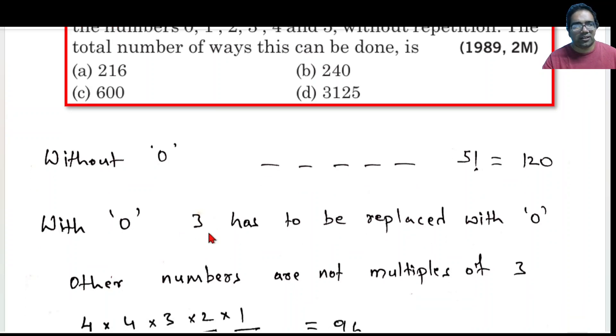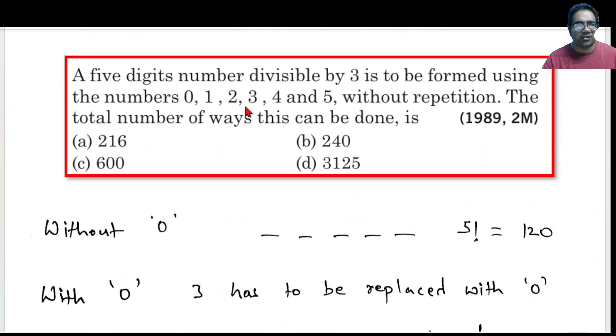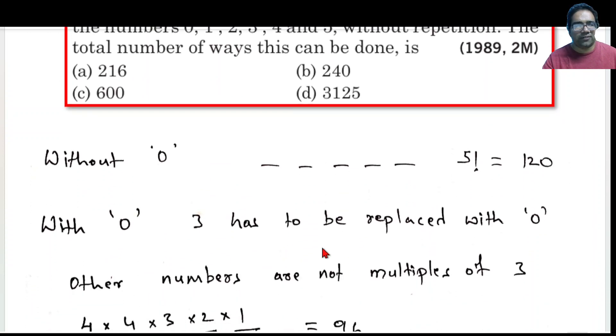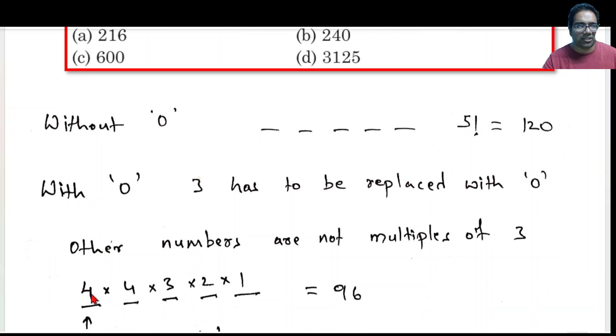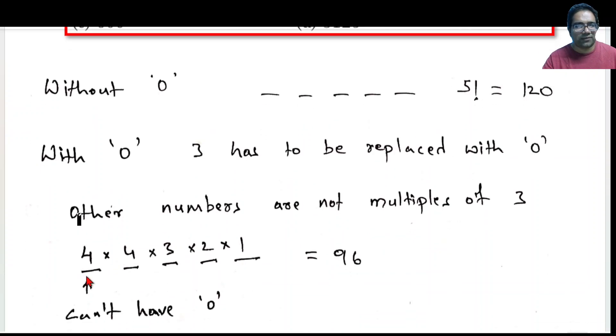So only 0 can be replaced only with 3. That means, again, the 5 digit options we can create with 0, 1, 2, 4 and 5. How many such numbers we can create? The first number cannot be 0 because it is a 5 digit number. So for the first digit, we have 4 options: 1, 2, 4 and 5.